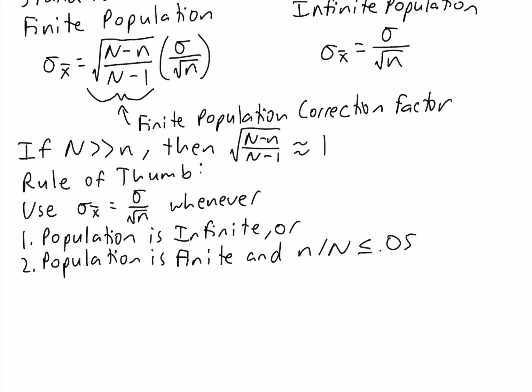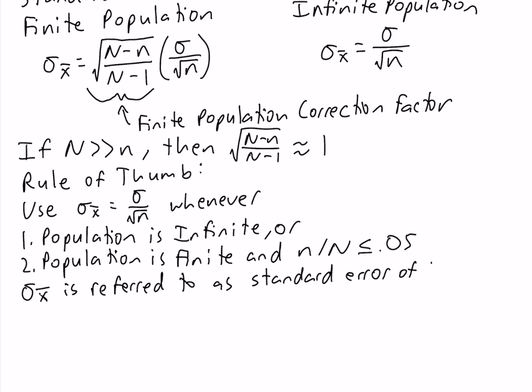You'll notice there are two sigmas, and they're different. Sigma x-bar is the standard deviation of the sample mean, while sigma is the standard deviation of the population. So that we don't confuse the two, sigma x-bar is often referred to as the standard error of the mean.